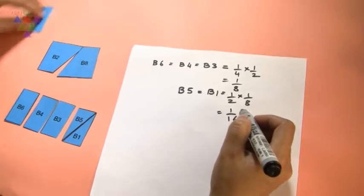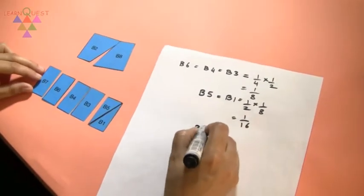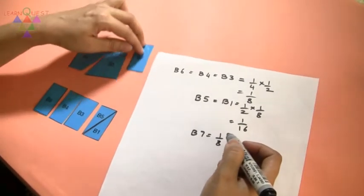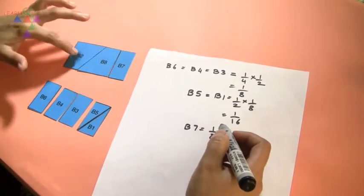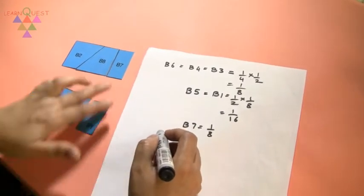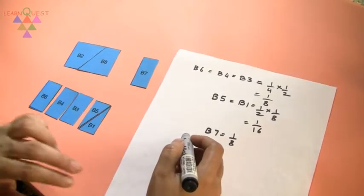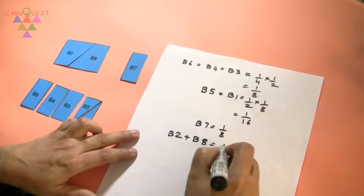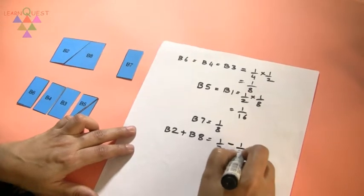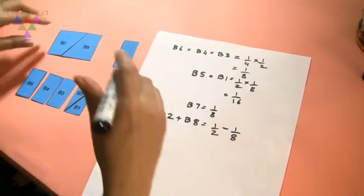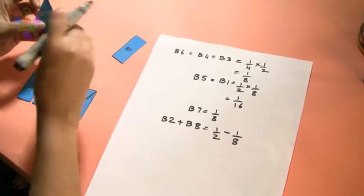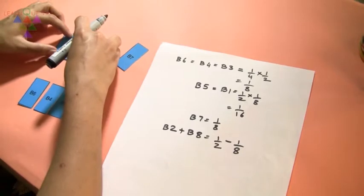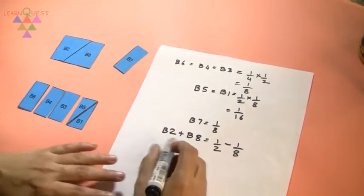B7 is the same as B6, so B7 is also equal to 1/8. Now B7 plus B2 plus B8 is half. So when I take away B7, B2 plus B8 will be half minus 1/8. Now I can see that B2 and B8 are of the same size exactly. First let me find how much do they add up to.